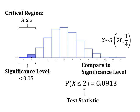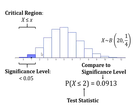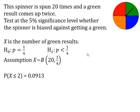The question is whether that is bigger or smaller than our significance level. Our significance level is 0.05 and this is 0.09, so it is greater than our significance level. That tells us that x = 2 is not in the critical region, because P(X ≤ 2) — the sum of those three bars — comes out to be more than our significance level. We would write down that P(X ≤ 2) = 0.0913.